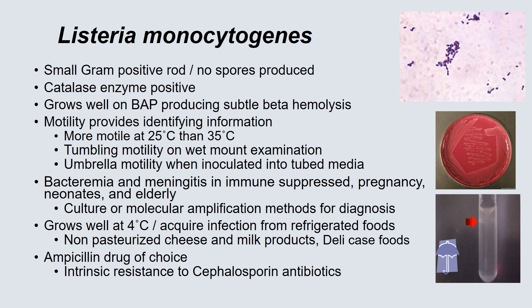Listeria has a characteristic tumbling motility on wet mount examination, and if inoculated into a semi-solid agar, it demonstrates umbrella motility. It can cause bacteremia and meningitis in the immunosuppressed, in pregnancy, neonates, and the elderly. The organism is very easy to culture, and molecular amplification methods are capable of detecting it from both blood cultures and CSF.